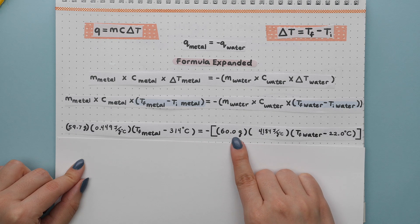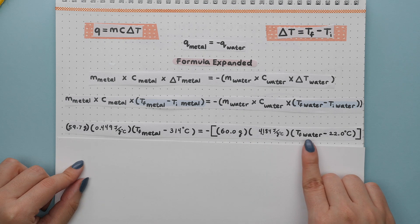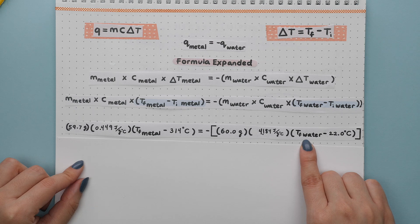Next we have the mass of water, the specific heat capacity of water. Again we don't know the final temperature of water, we only know the initial temperature.